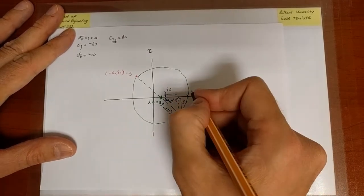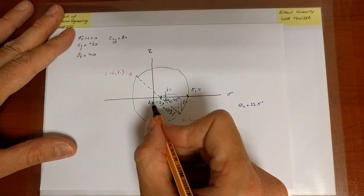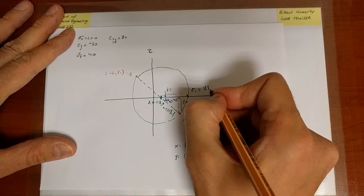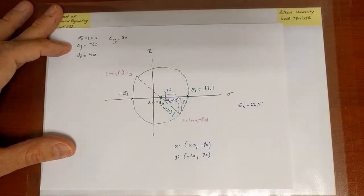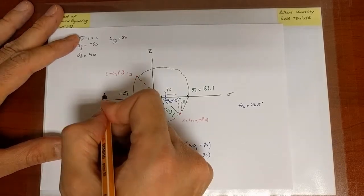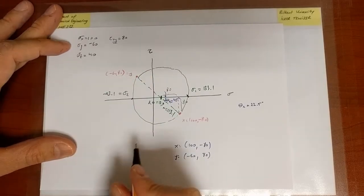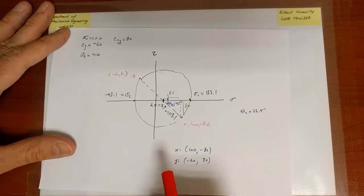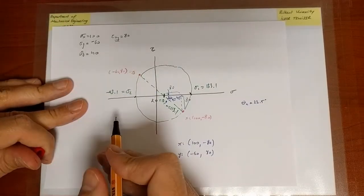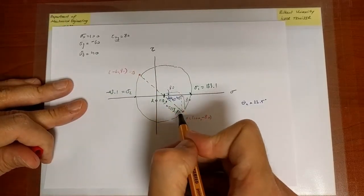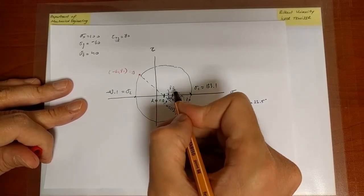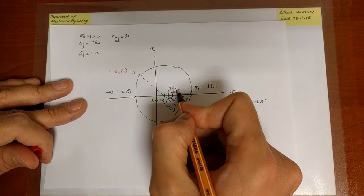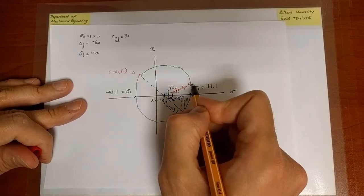So just to complete, we could of course go ahead and calculate the principal stresses. Sigma 1 is 20 plus that, so it's 133.1. Sigma 2 is equal to minus 93.1. And how about the third principal stress? Well, the third principal stress is sigma z, which is equal to 40, which is going to lie somewhere there. So that is sigma 3 equals sigma z equals 40.